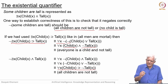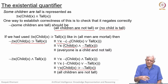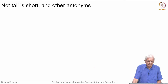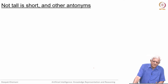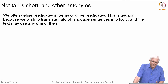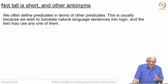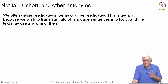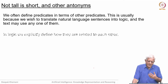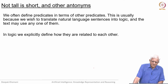This is a point where students often get confused as to why we use AND here, and this hopefully should clear the air. When you talk about tall, we also think of short — we have antonyms in our language and we define predicates in terms of other predicates. This is usually because we wish to translate natural language sentences into logic, and the text may use any one of them. Somebody may say the boy is short, somebody may say the boy is not tall, but we should understand them to be the same thing.